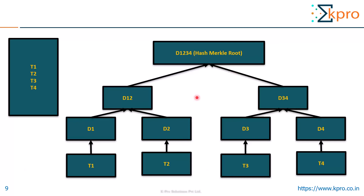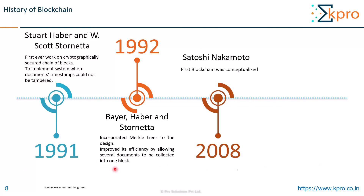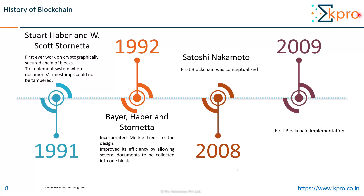If you want to know more about the Merkle tree and hashing, you can follow my other video on Merkle tree and hashing, whose link I have put in the description below. The incorporation of Merkle trees improved efficiency by allowing several documents to be collected into one block. In 2008, Satoshi Nakamoto conceptualized the first blockchain, and in 2009 the first blockchain was implemented — which I'm sure you guys know is Bitcoin.